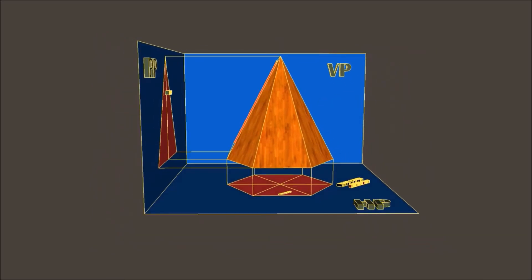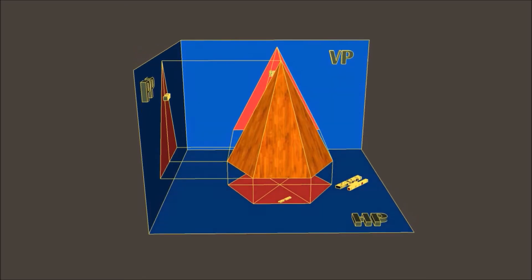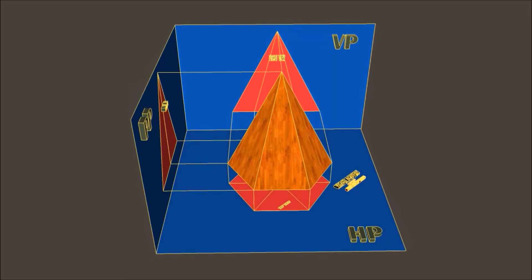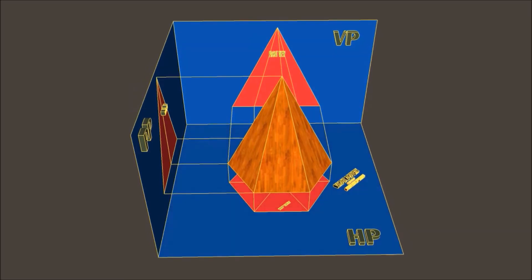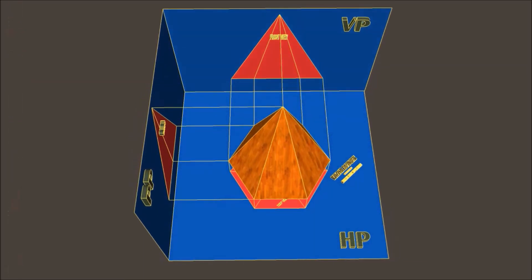When we observe the subject from the top we are going to obtain a hexagon. Not only a hexagon, we are going to obtain a hexagon and some extra lines which represent the slope of this pyramid, the hexagonal pyramid.